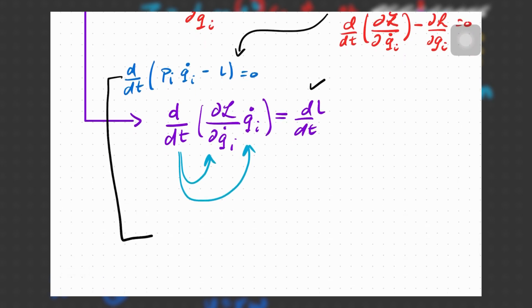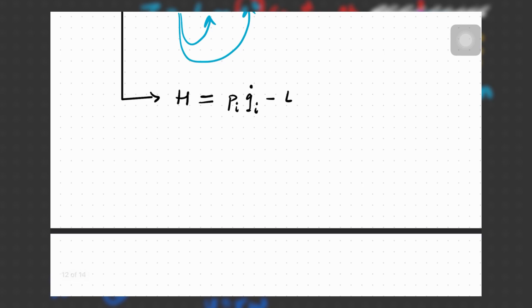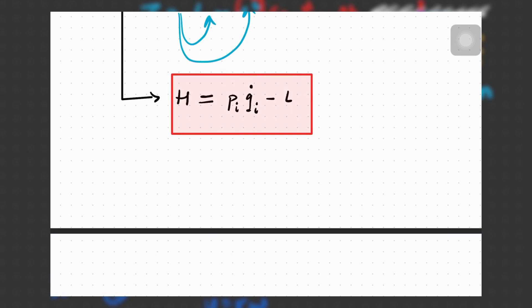From this equation, I'm going to define a new quantity called the Hamiltonian. It will be a function of the generalized coordinates and the Lagrangian. For this continuous classical system — with no discrete things and no fields, just generalized coordinates — the Hamiltonian looks like: H = p_i q_i-dot minus L. This makes sense, and now let's see how the change in the Hamiltonian relates to the change in the Lagrangian.